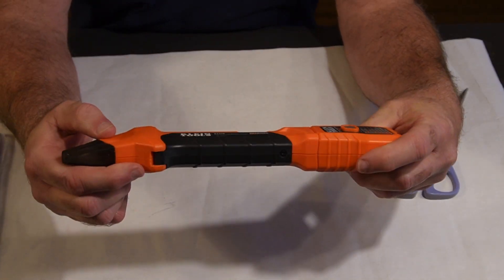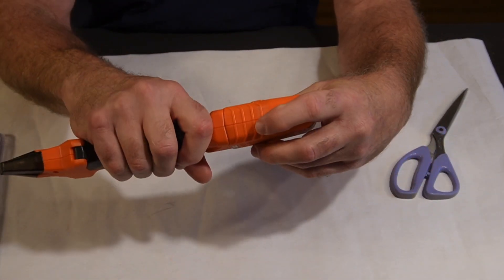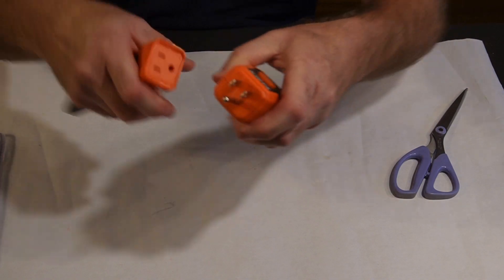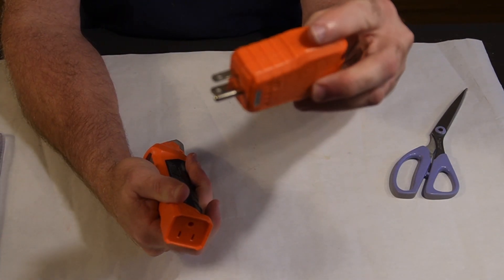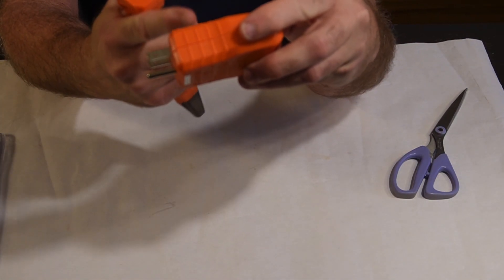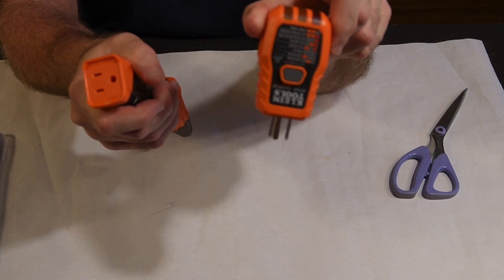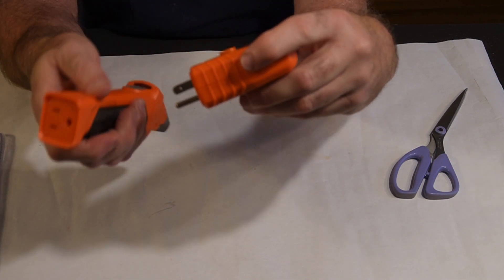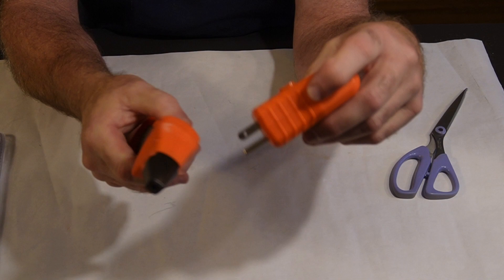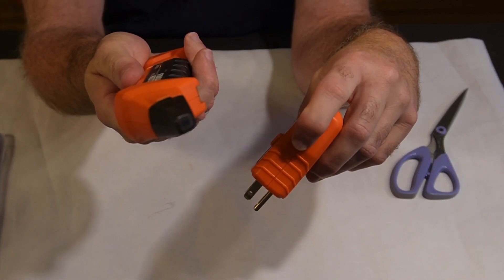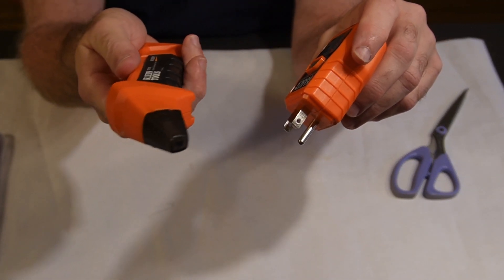I have this Klein circuit detector. This part comes out and that's just your standard outlet tester, but it has some electronics in it. In combination with this, you can trace circuits back to the panel.